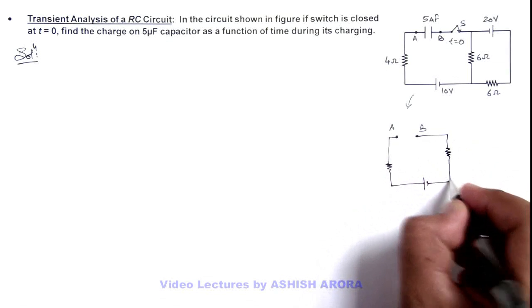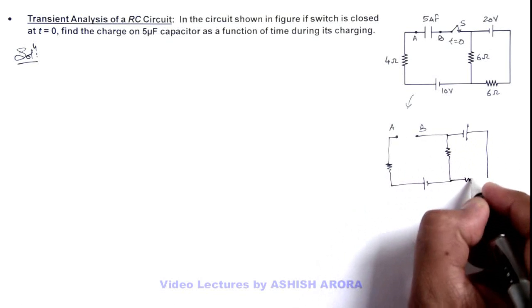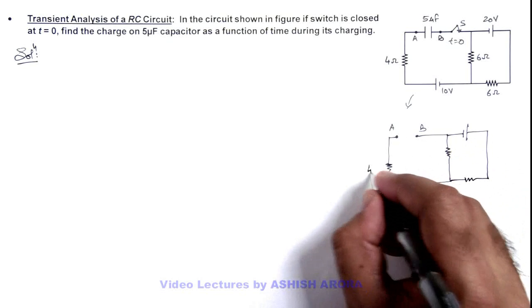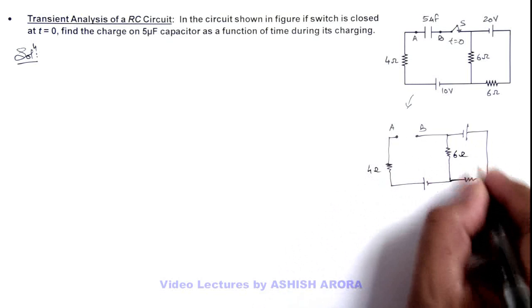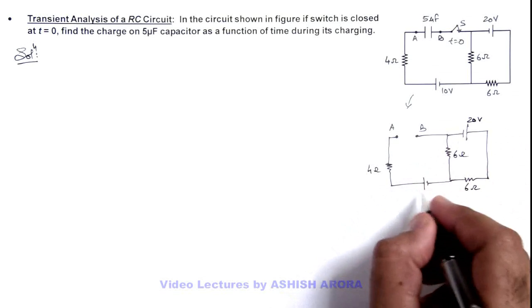You can see this circuit across terminals A and B - this is a 4 ohm resistance, 6 ohm resistance, and another 6 ohm resistance. This is a 20 volt battery and a 10 volt battery.